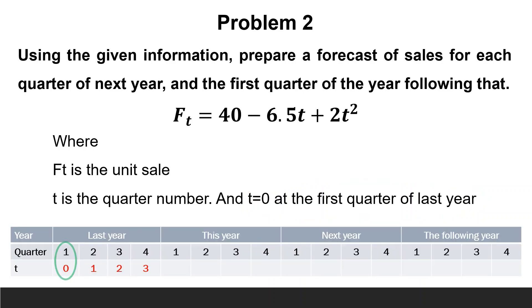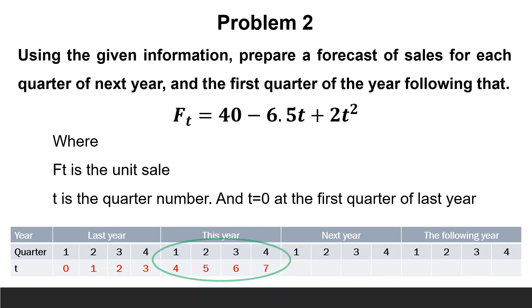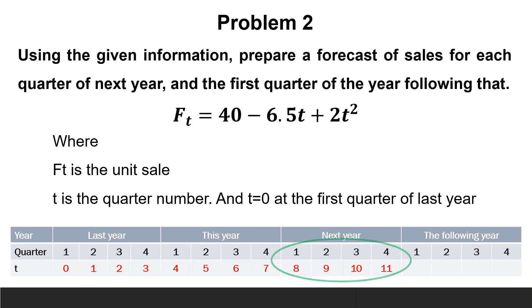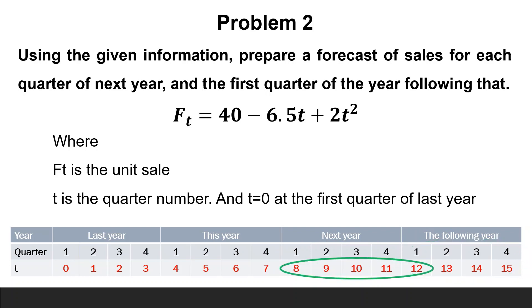For last year, t equals 0 for the first quarter, t equals 1 for the second, t equals 2 for the third, and t equals 3 for the fourth quarter. For this year, t equals 4 for the first quarter, t equals 5 for the second, t equals 6 for the third, and t equals 7 for the fourth quarter. For next year, t equals 8 for the first quarter, t equals 9 for the second, t equals 10 for the third, and t equals 11 for the fourth quarter. For the following year, t equals 12 for the first quarter. So we will use t equals 8, 9, 10, 11, and 12 to compute the forecast.